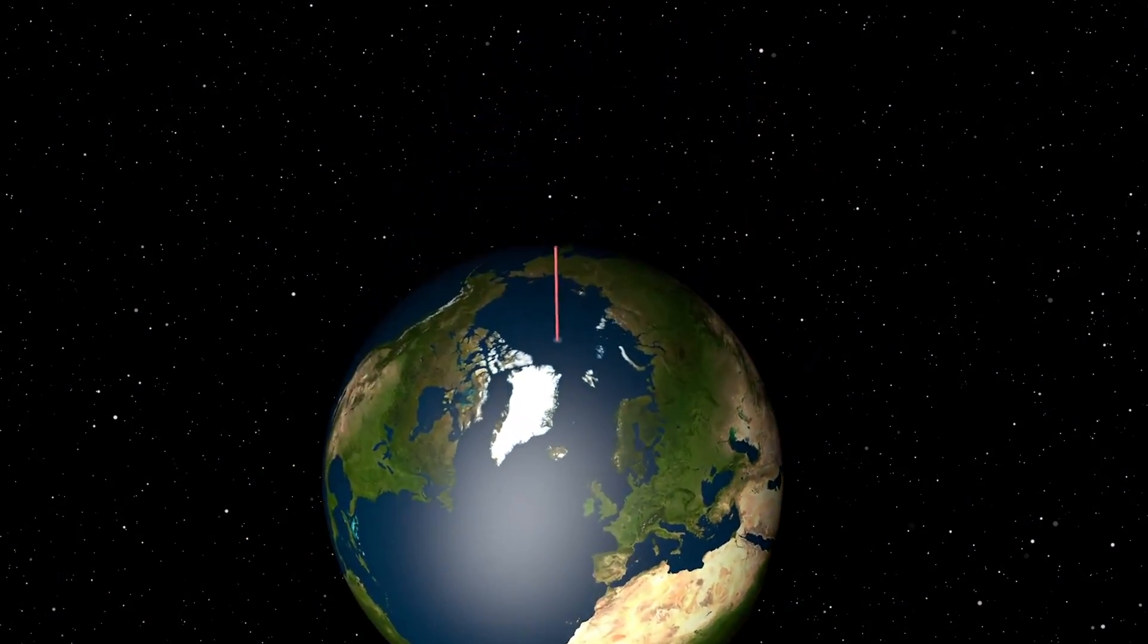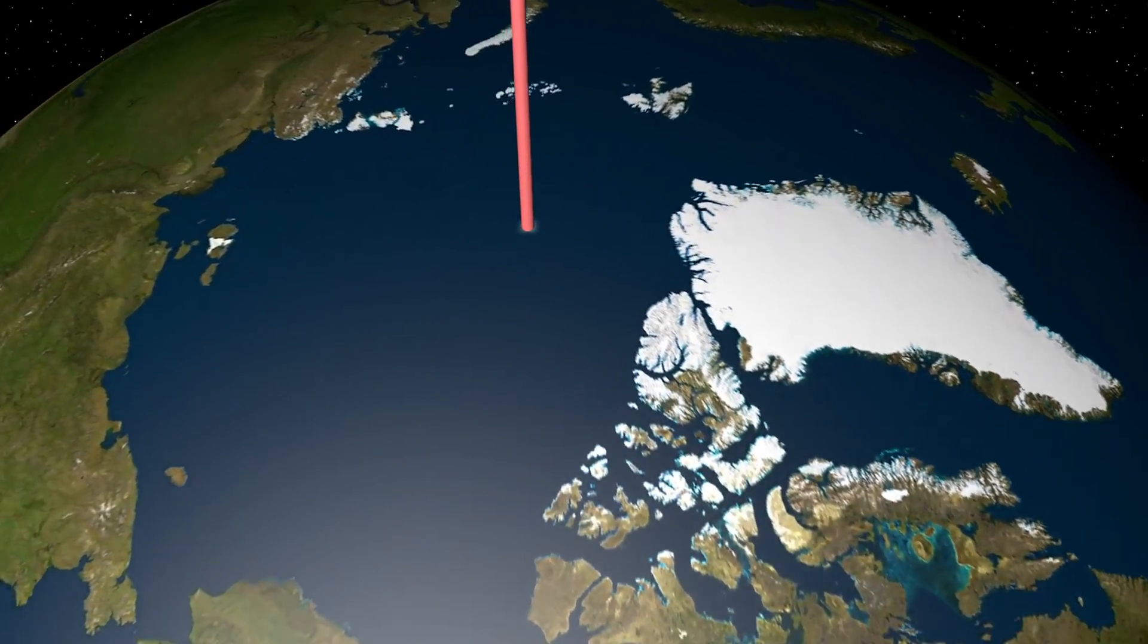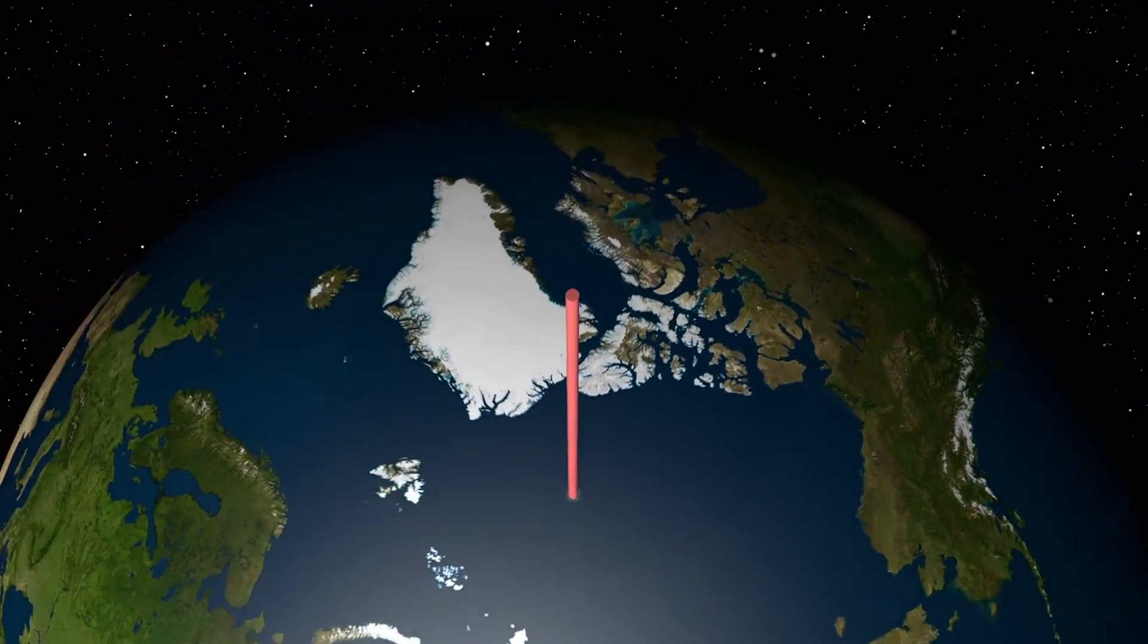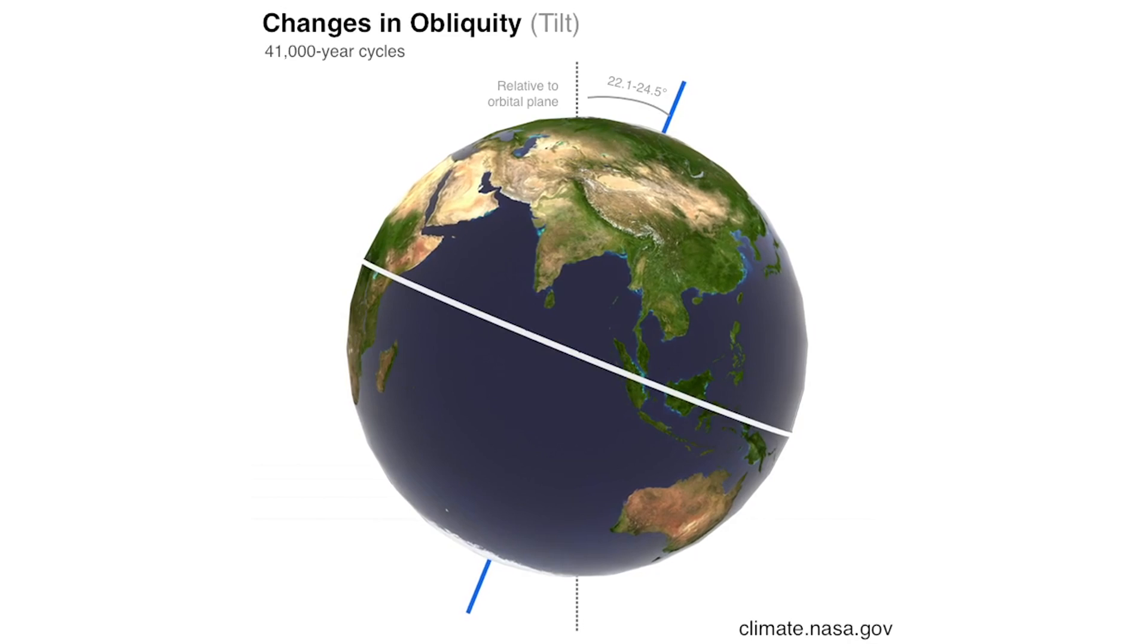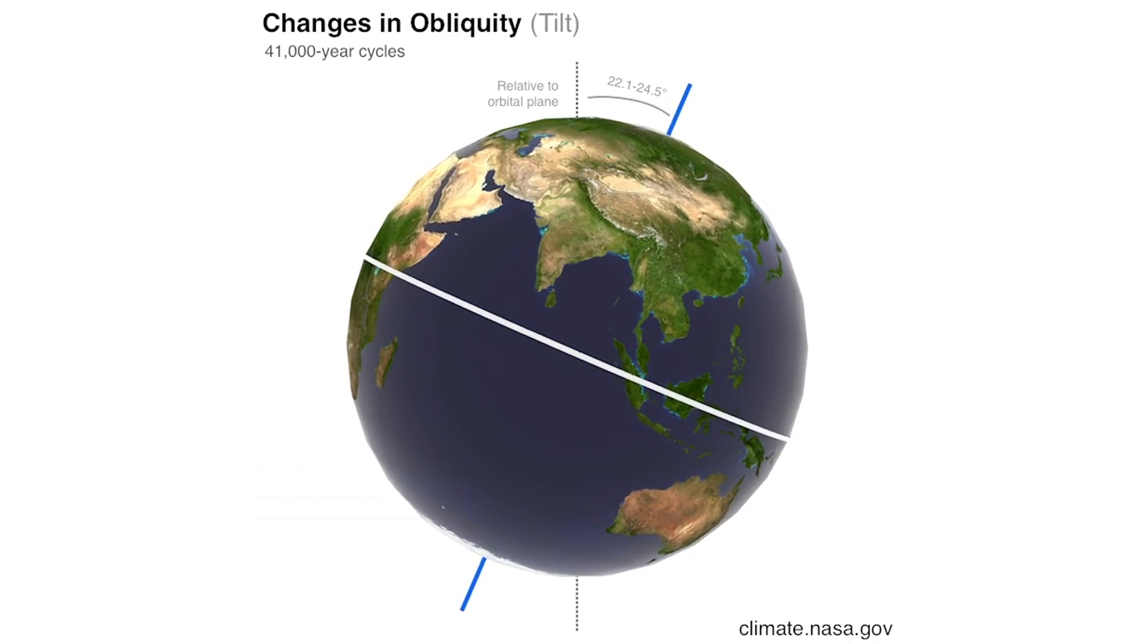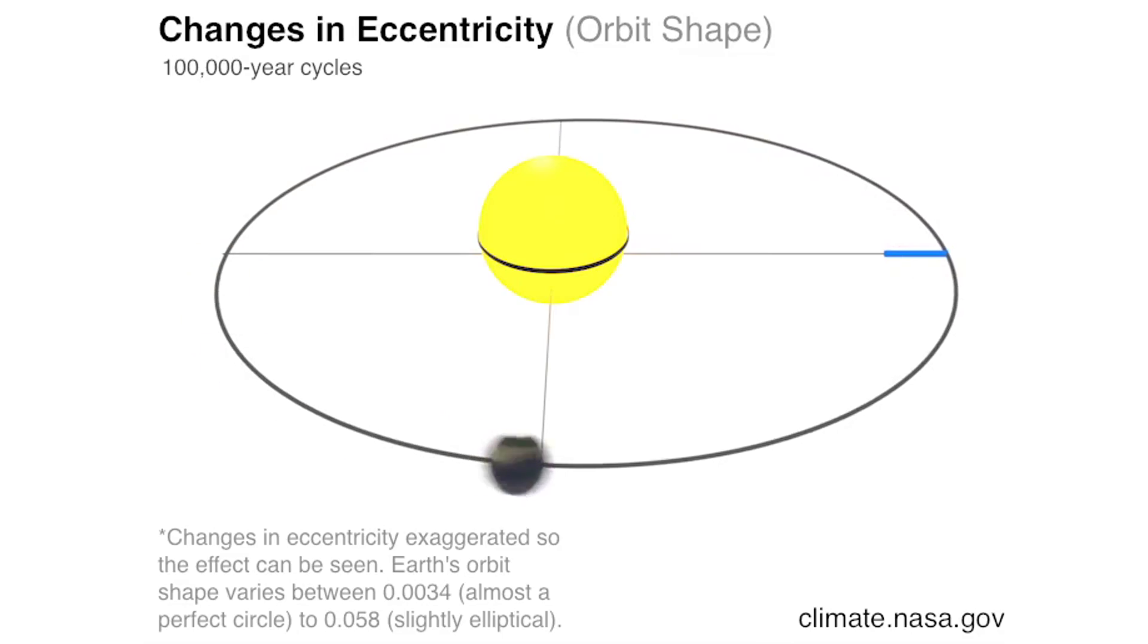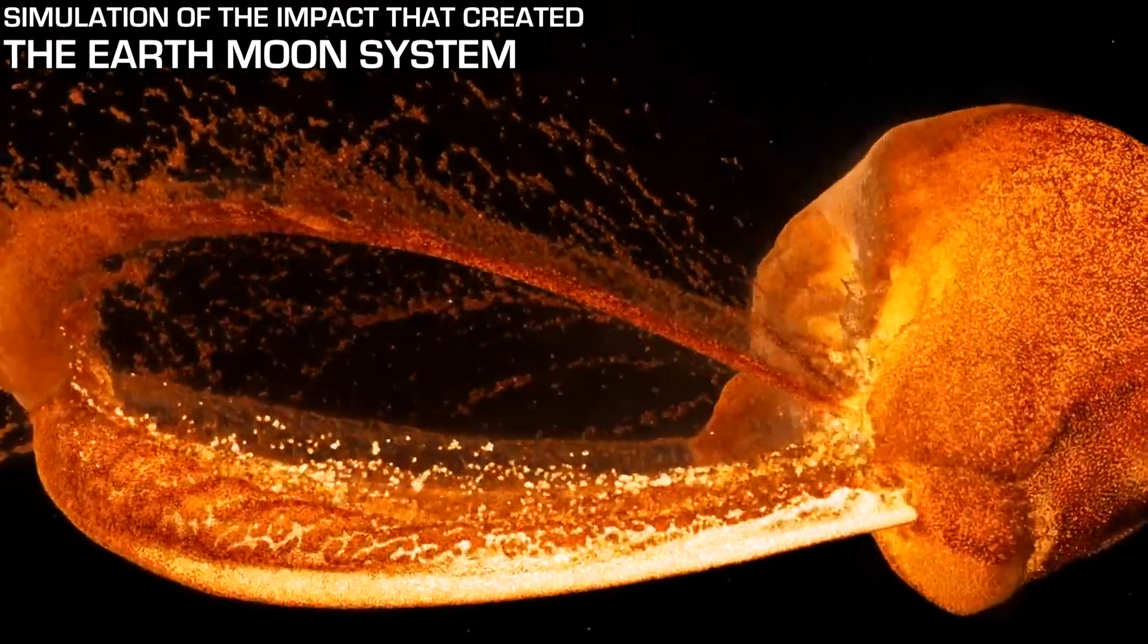The geographic poles are represented by the axis the Earth is physically rotating on. The axial tilt of the Earth is currently around 23.5 degrees and slowly wobbles between 22.1 and 24.5 degrees over around a 41,000 year cycle. And the geographic poles have been relatively stable like that for billions of years, probably since the formation of the Earth-Moon system over 4 billion years ago.